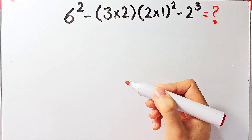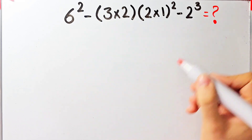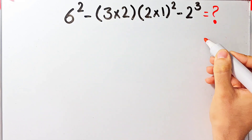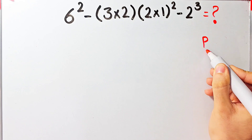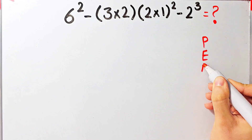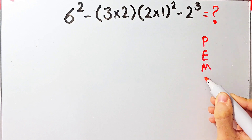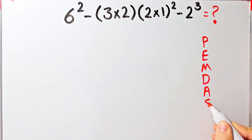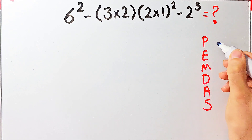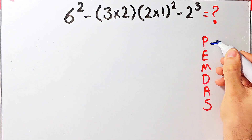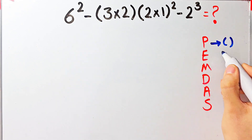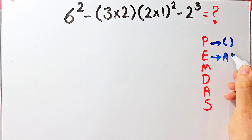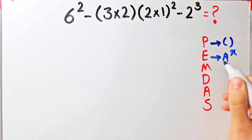To solve this question we need to follow the order of operations, which is PEMDAS. PEMDAS shows the priority of the mathematical operations, and if you don't pay attention to this rule you get the wrong answer. In this rule, P stands for parentheses, E stands for exponent, M stands for multiplication.